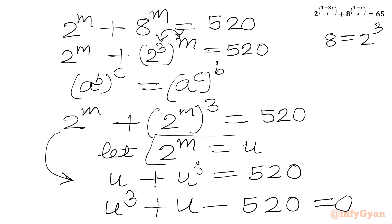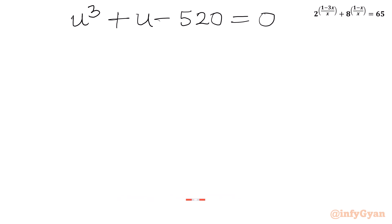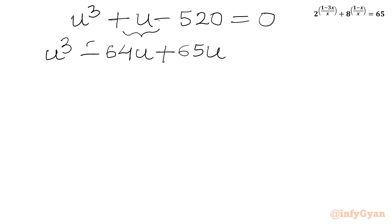Remember, u is 2 raised to m and m is 1 over x. Let's solve this cubic first: u cubed plus u minus 520 equal to 0. I will use the method of factorization and split the middle term: u cubed, then write plus u as minus 64u plus 65u, so that 65 minus 64 gives plus 1, minus 520 equal to 0.